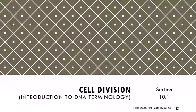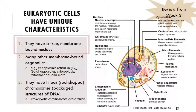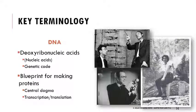Getting into section 10.1 on cell division, which is really about DNA terminology. Eukaryotes have a true nucleus — a membrane-bound organelle that houses their DNA. DNA stands for deoxyribonucleic acids, a type of macromolecule that provides the genetic code — a blueprint for making proteins. Three nucleotides code for one amino acid, and those amino acids build up proteins. The relationship between DNA, messenger RNA, and proteins is called central dogma or transcription and translation. We'll cover that in more depth next week.